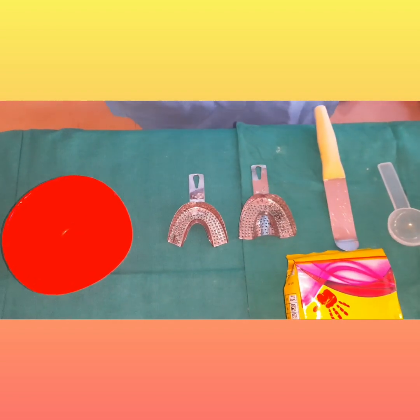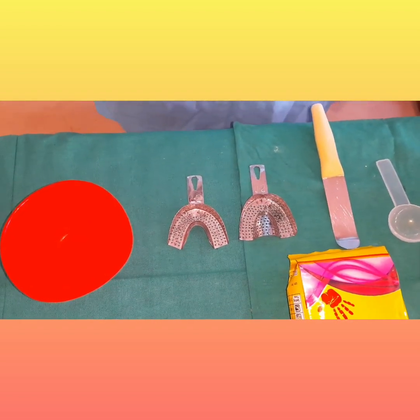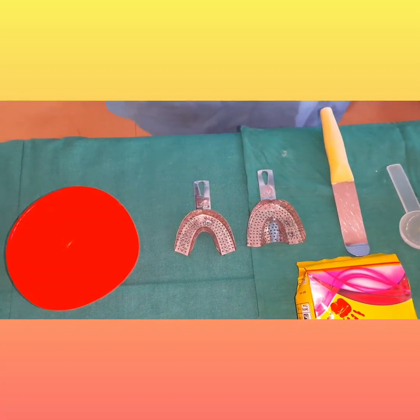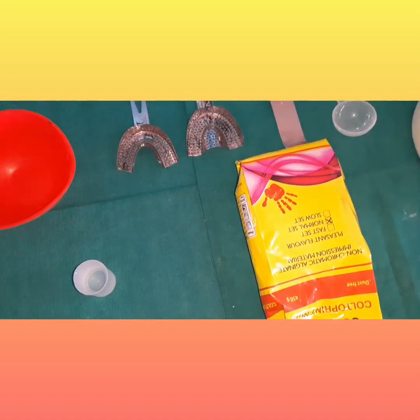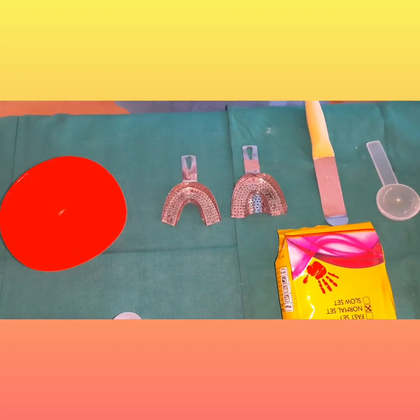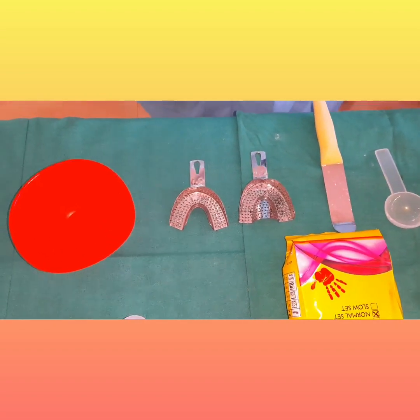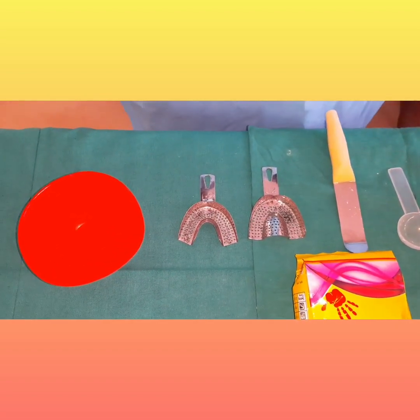Next we come to manipulation of alginate. As we know, alginate impression material is supplied in the form of powder. This is a non-chromatic alginate impression material and it will be mixed in a proper ratio with water, and accordingly we will be making an impression.